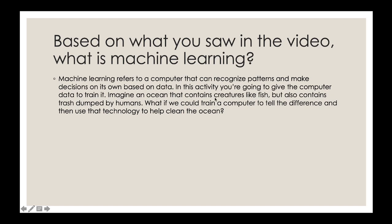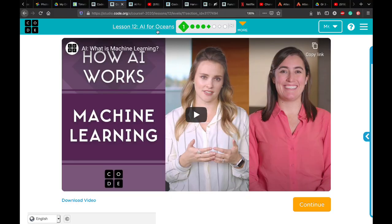Imagine an ocean that contains creatures like fish, but also contains trash dumped by humans. What if we could train a computer to tell the difference, and then use that technology to help clean the ocean? This is exactly what we're going to do today. Let's go to code.org and start training our machine. Go to Lesson 12: AI for Oceans. As you saw from the video, AI stands for artificial intelligence. We already watched this video — press continue and start Practice 2.